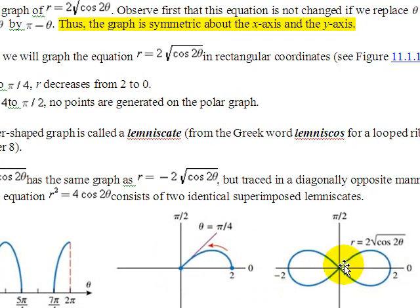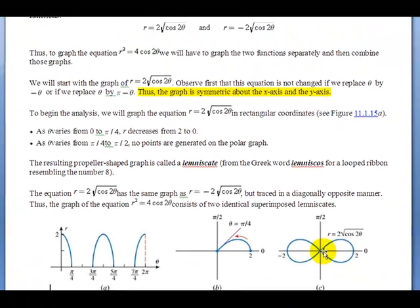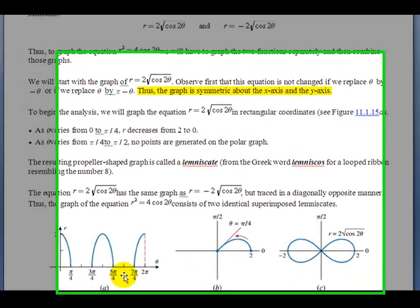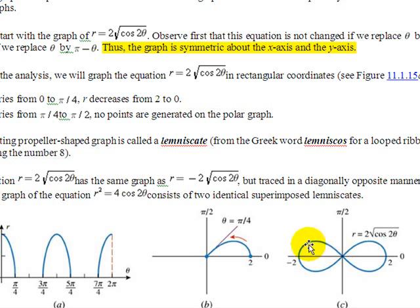Now using the symmetry, we reflect that into all four of the quadrants and we have this little propeller looking object here. This is called a lemniscate. Now remember we've only graphed part of R. We didn't graph negative 2 square root of cosine of 2θ. But if you were to repeat the procedure for that, you'd find that you just end up retracing this shape here.